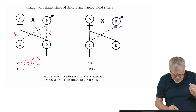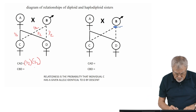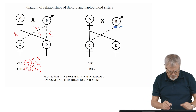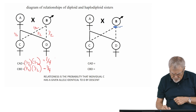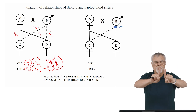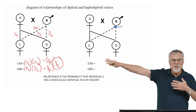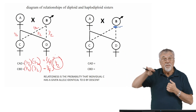If you then take the next path, CBD through the father, the probability is one half that the allele came from the father and one half that individual D got the same allele from the father. So that also equals one fourth. You add the two paths together and get one half. So the genetic relationship of two sisters in a diploid family like ours is one half — my sister and I are related to each other by one half and share one half of our genes in common.